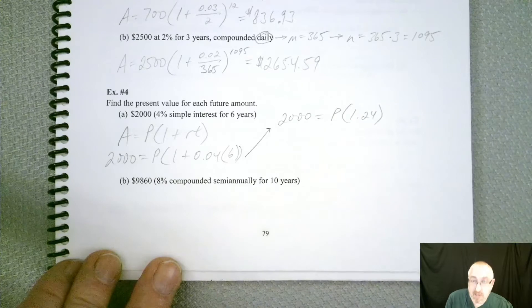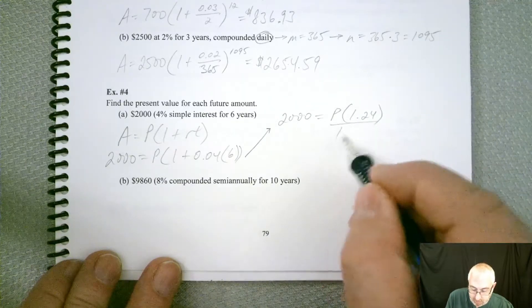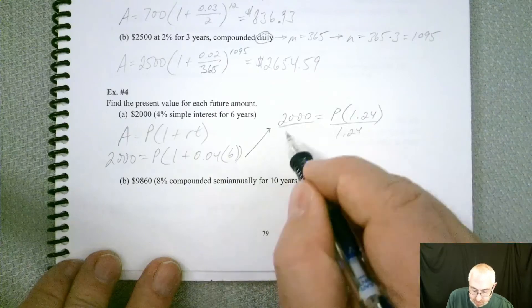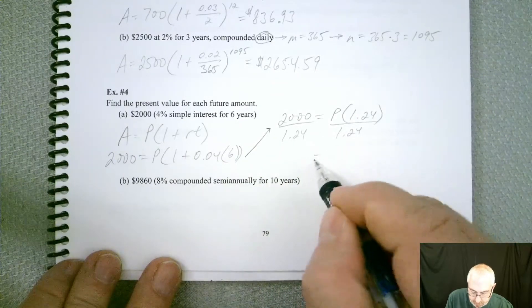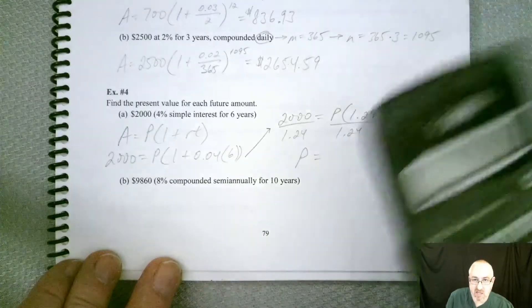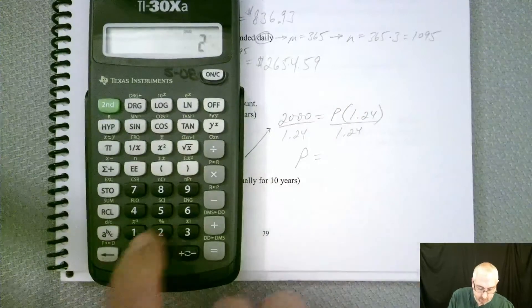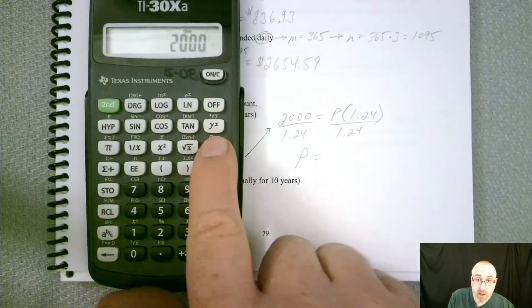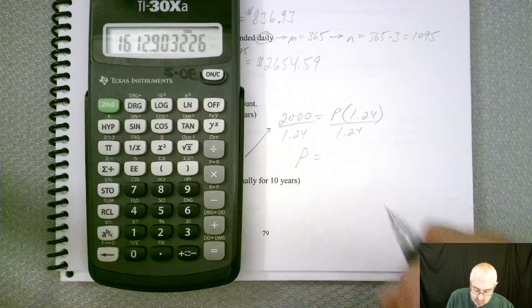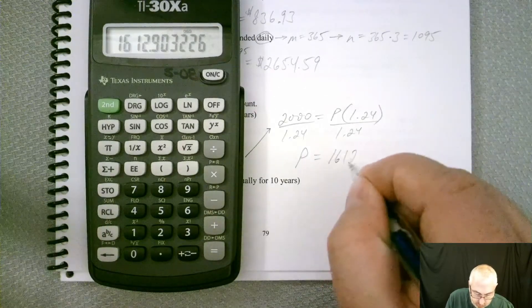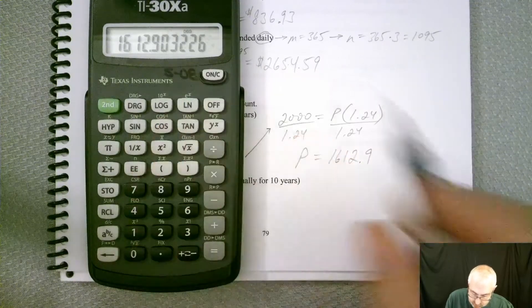Well, how can we get P by itself? We can actually divide by it, right? If you're multiplying by something and you want to undo it, we can divide by it. I'm going to flip the two sides just because it's easier to write a longer number on the other side. So 2,000 divided by 1.24. So 1,612.9. It looks like it's going to stay a 0.